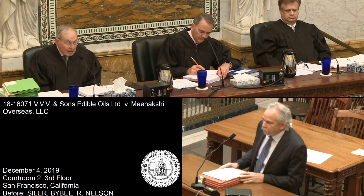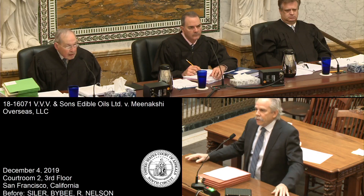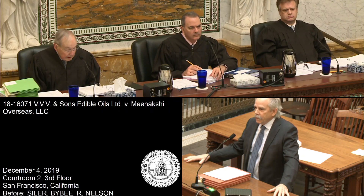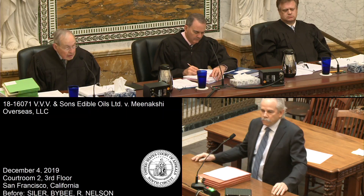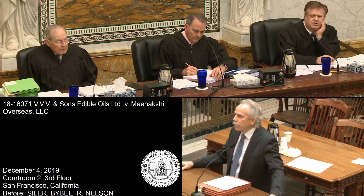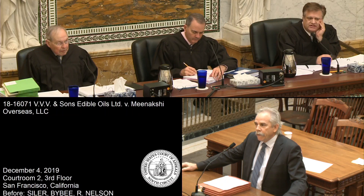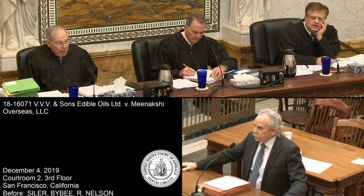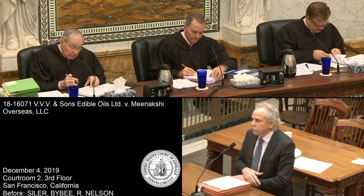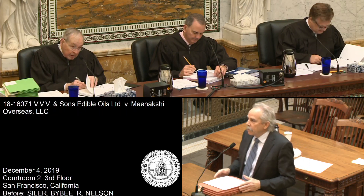Good morning, Your Honors. John Rannells from Baker and Rannells for the appellee. A proceeding in the trademark office tracks a proceeding before a federal district court. They are bound by the federal rules of evidence, and they're bound by the federal rules of civil procedure. Could 3V obtain damages before the TTAB? No, they could not. And so why isn't that dispositive under Restatement Second of Judgments §26.1(c)?